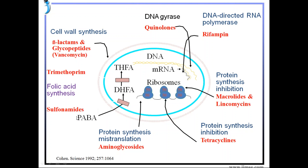Sulfonamides work by inhibiting folic acid synthesis — para-aminobenzoic acid is converted into dihydrofolic acid in the bacterial cell, and sulfonamides act at this level. During the conversion of dihydrofolic acid to tetrahydrofolic acid, the drug trimethoprim acts, thereby inhibiting the synthesis of tetrahydrofolic acid. These folic acids are essential for DNA development in bacteria, so the bacteria cannot replicate once these antibiotics are applied, thereby killing them.